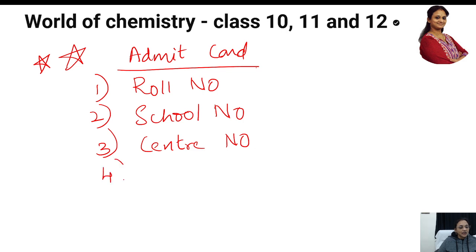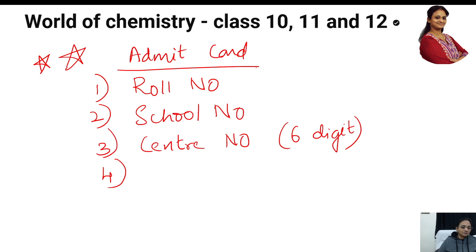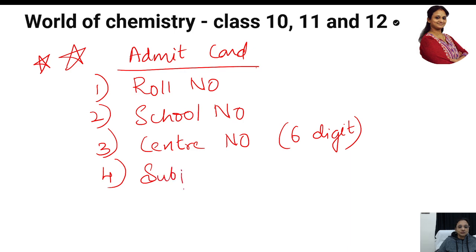The center number is a six-digit number. For some states like Chennai, Guwahati, Thiruvananthapuram, and Prayagraj, it is only five digits. But for Delhi students and others, it is six digits. Next important thing: the subject code is also there in your admit card. So don't forget your admit card.